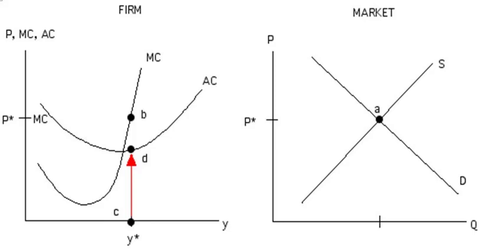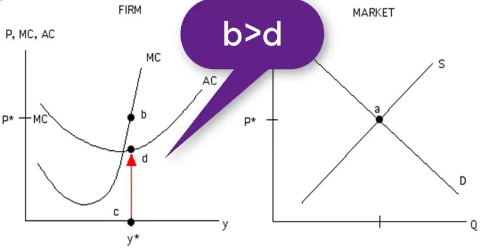This is point D on the AC curve. Next, we compare price at point B with average cost at point D. If B is greater than D, P star is greater than AC at Y star, then it means the firm is earning an economic profit.